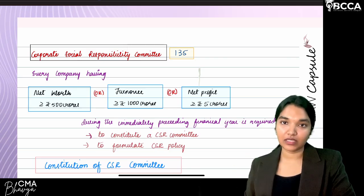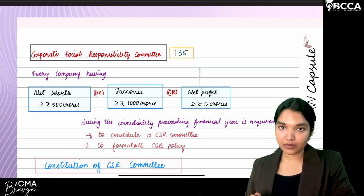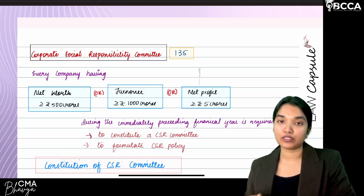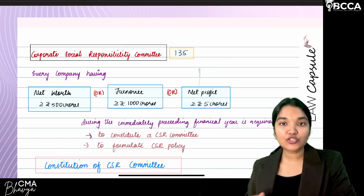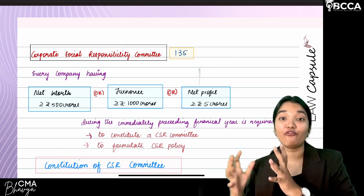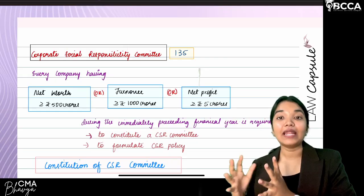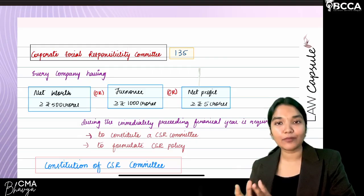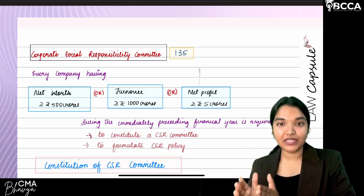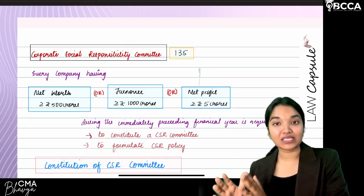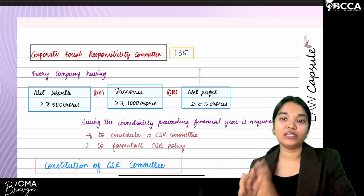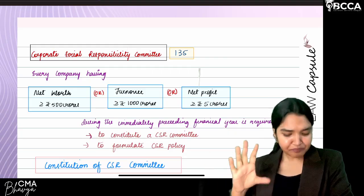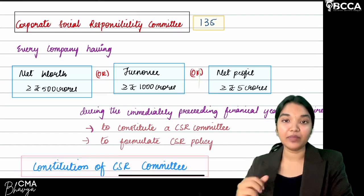CSR activities will be recommended by the Corporate Social Responsibility Committee. Now, which companies must form a CSR committee and must formulate a CSR policy? The CSR policy contains what activities to be conducted, how much expenditure to be spent, and all related information. Let's quickly see which class of companies qualifies.